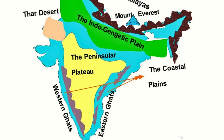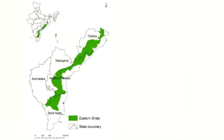The Peninsular Plateau of India is bounded on both sides by coastal plains that extend along the Arabian Sea on the west and the Bay of Bengal on the east. The eastern coastal plains go from West Bengal in the north to Tamil Nadu in the south, passing through Andhra Pradesh and Odisha along the way.